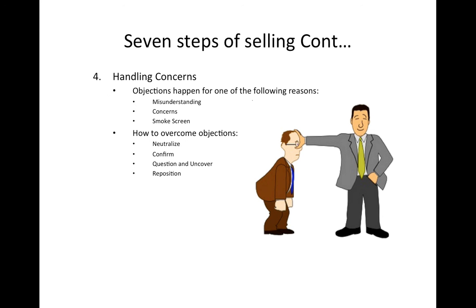Once you've found that out, you have to reposition yourself. You could say something like, 'I apologize, I didn't explain all the features and benefits for this set. There is no way you can feel this piece of furniture is too expensive for the price point we are offering right now.' When you make that open statement, you go back and explain all the features and the benefits for the set.